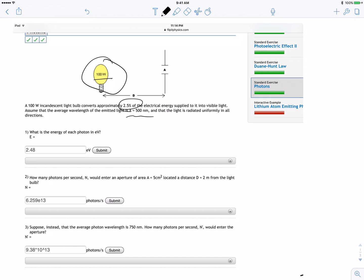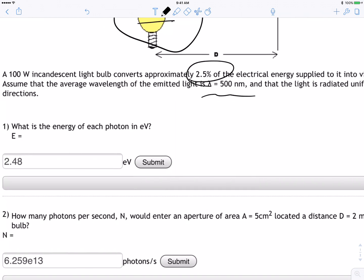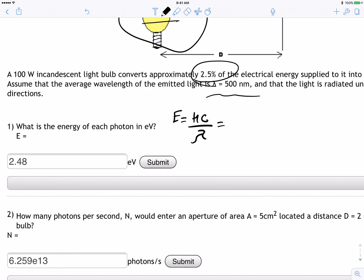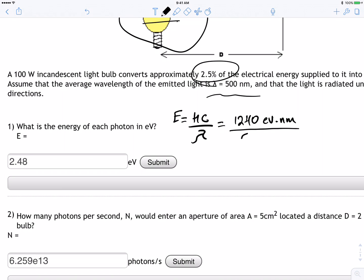What's the energy of each photon in electronvolts? We'll use E equals hc divided by lambda. Since they want it in electronvolts, I'll use 1240 eV nanometers divided by 500 nanometers. For mine I get 2.48 electronvolts.